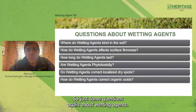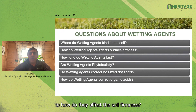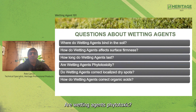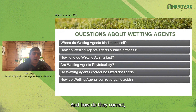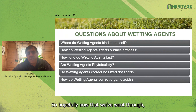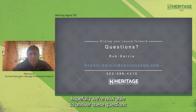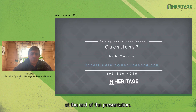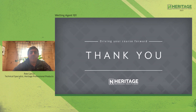Revisiting the key questions about wetting agents: where do they bind, how do they affect soil firmness, how long do they last, are they phytotoxic, do they correct localized dry spots, and do they correct organic acids? Hopefully, having gone through this presentation, we are now able to answer all of these questions. Thank you for attending.